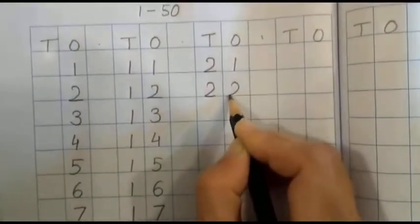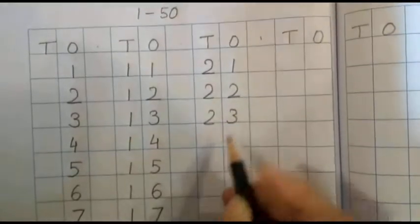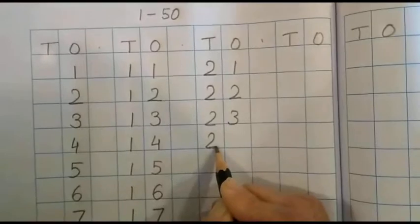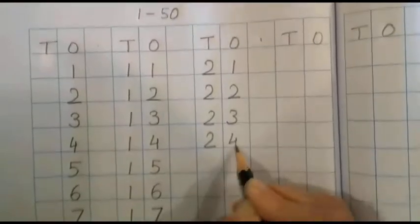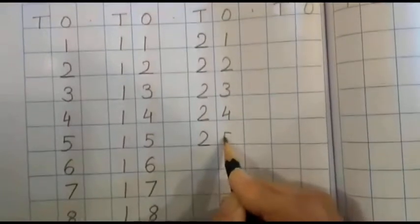After two one twenty one, two two twenty two, two three twenty three, two four twenty four, two five twenty five.